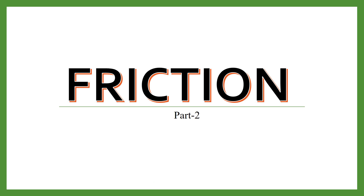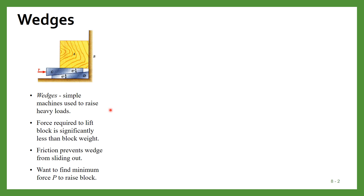In this video we will learn some more concepts related to friction. First we will learn about wedges, so they are simple machines. Wedge C and D are forming a wedge. These are simple machines that can be used to lift weights, and in these machines the force required to lift the blocks is significantly less than their weight. The friction force prevents the wedge from sliding out, and we want to find the force value required to raise the weight.